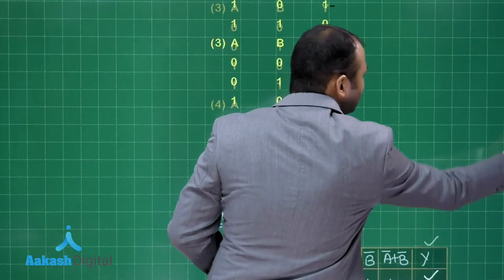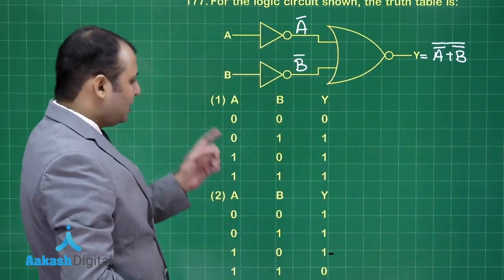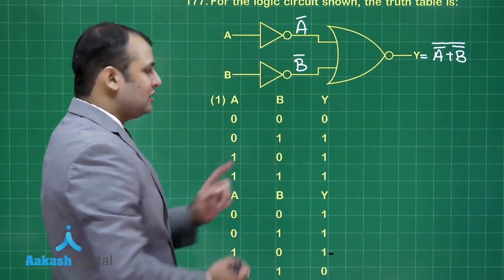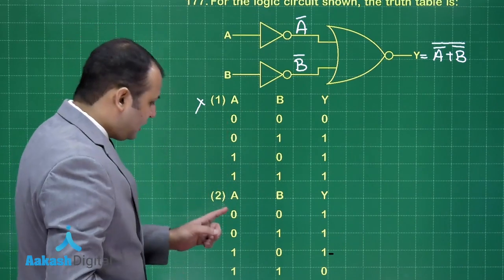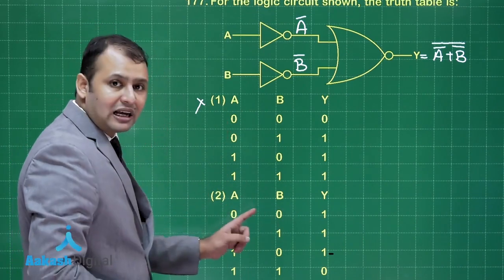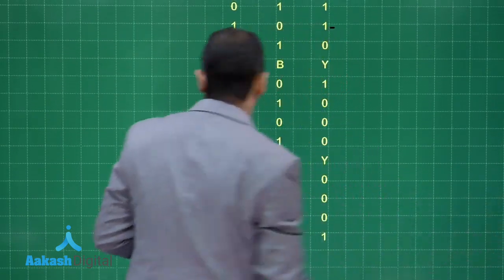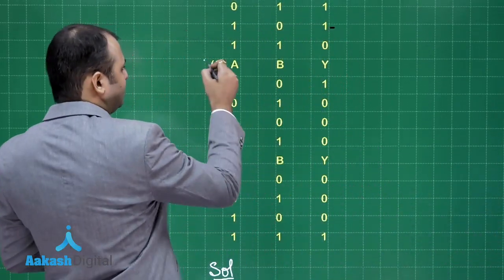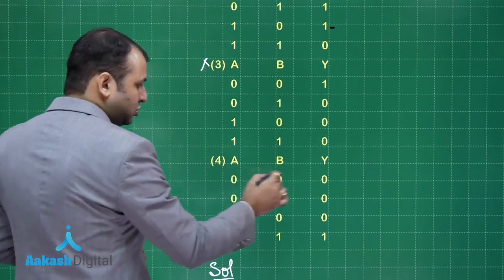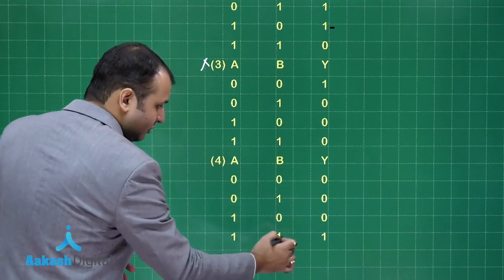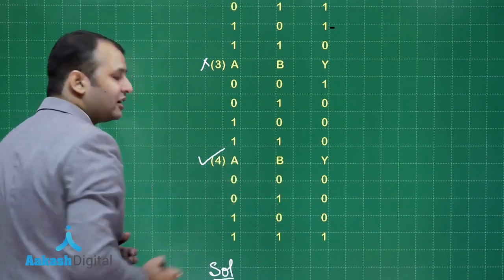Let us see which is the best suited option here. If you see the first option, it says 0 and 1 output is 1, this is not possible. This is B 0, 0, 1, this is again not possible. Let us see the third one 0, 1, 0, 1, this is not possible. This one 0, 0, 0, 0, 0, 0, 1, 1, 1. That means this is the correct option.